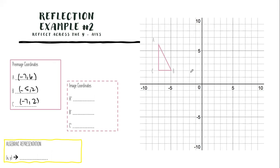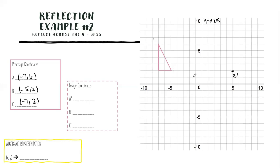This time we're going to reflect across the y-axis. This vertical line is the y-axis. I like to start with the point closest to the axis, so I'll start with B. B is five units away from the y-axis going left, so it's going to be five units to the right. Here's B prime. Then C — it's seven units from the y-axis going left, so C prime is seven units to the right.